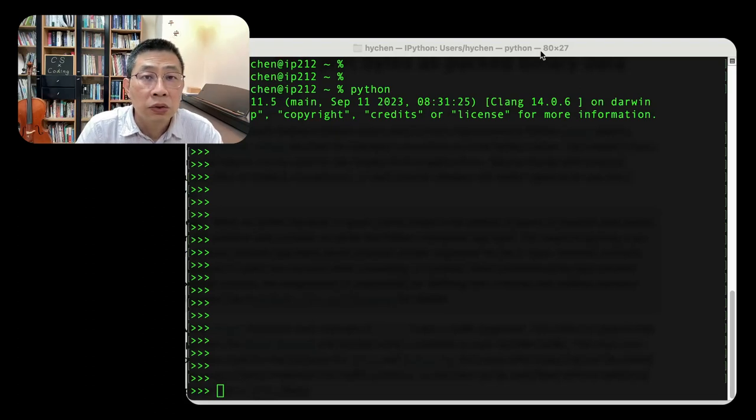Hello, we are going to talk about binary representation, especially how to use binary numbers to represent values. There are basically two types of values in computer programming. One is called an integer.